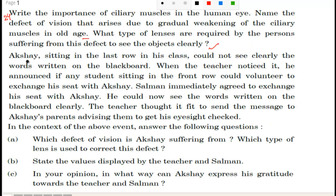Now, it's a value-based question. The second part: Akash, sitting in the last row of his class, could not see clearly the words written on the blackboard. When the teacher noticed it, he announced if any student sitting in the front row could volunteer to exchange his seat with Akash. Salman immediately agreed to exchange his seat with Akash — Salman is very helpful. Akash could now see the words written on the blackboard clearly because he is now nearer to the blackboard.